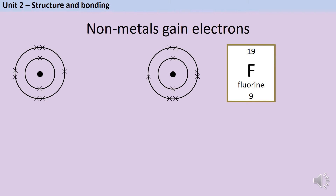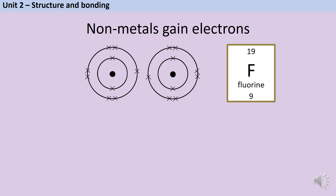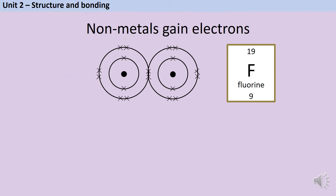But when two non-metal atoms bond, they're both short of electrons, and so one can't give an electron to the other one. So instead of having electron transfer, what we actually have is electron sharing. There is a pair of electrons that both atoms have access to, and this is what we call a covalent bond — a shared pair of electrons.